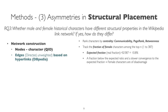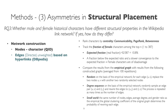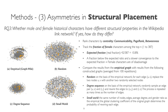We then compare the results from this empirical graph with results from three constructed graphs. For random, we randomly rewire every edge. For degree sequence, we try to preserve the degree distribution of the empirical graph. In the case of small world, we constructed the network while keeping the gender ratio and also some other key factors like number of nodes, edges, and average degree.